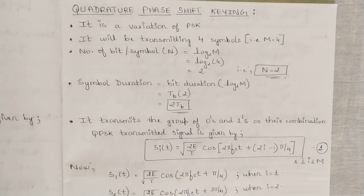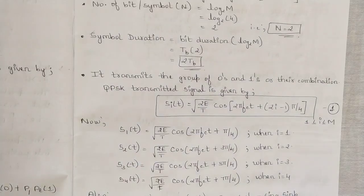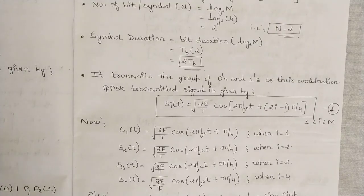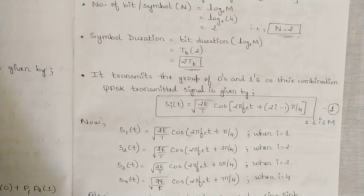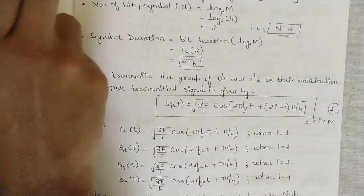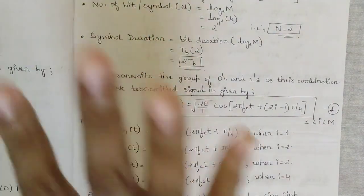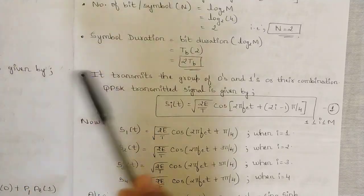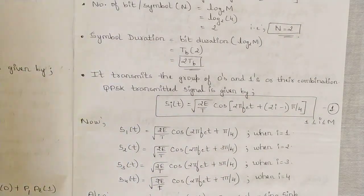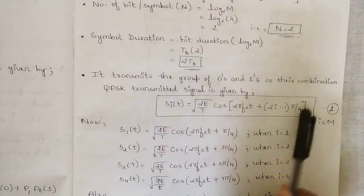QPSK transmits a group of zeros and ones or their combinations — similar to BPSK but grouped. Since we group two bits together, there are four possible combinations: 00, 01, 10, and 11. That's why it is called quadrature — it transmits the group of zeros and ones or their combinations, giving us four distinct groups.